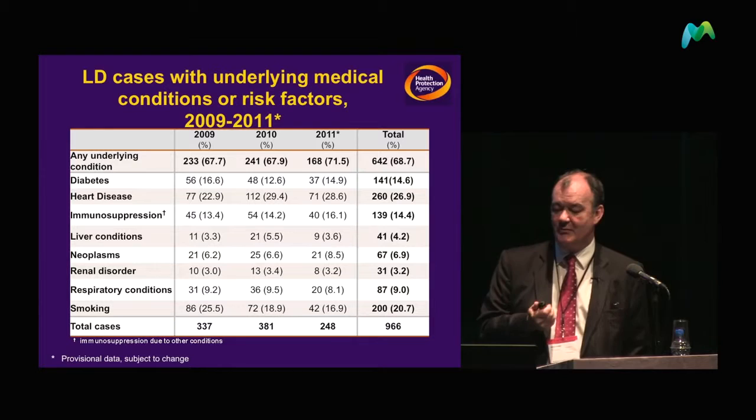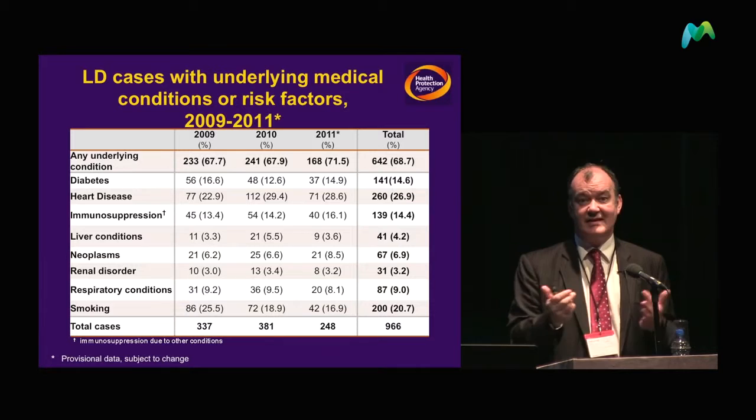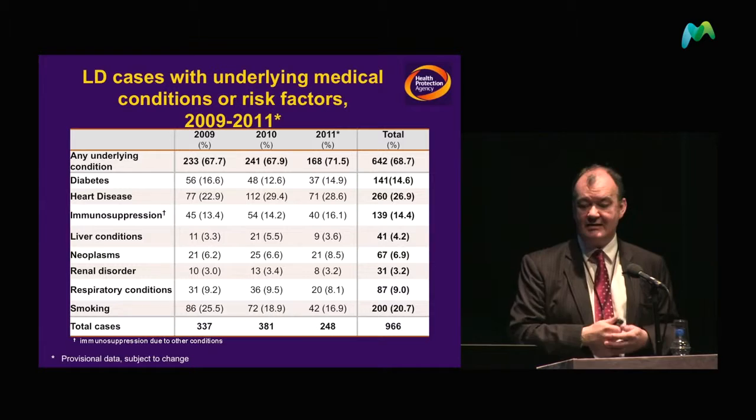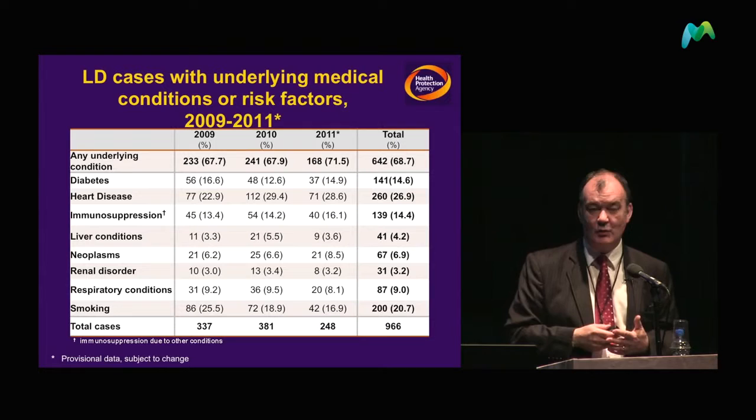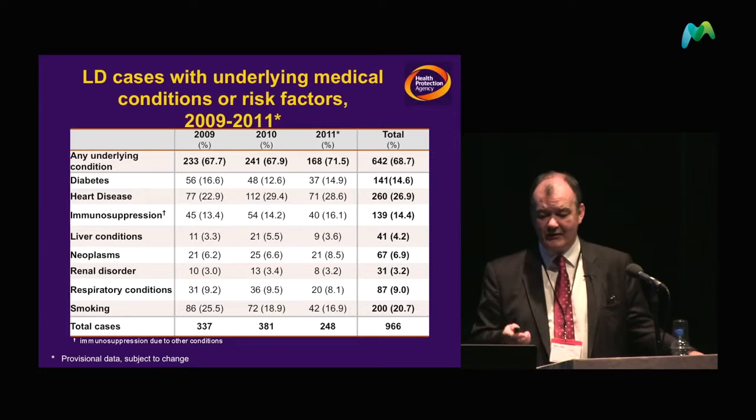An important point is that all of us could be exposed to the same level of Legionella, but only very few would actually get it. There is some intrinsic factor within us that determines whether or not you get Legionnaires' disease. Heart disease and smoking are just some of the factors, and to be honest, we're not really clear about what the other factors might be.